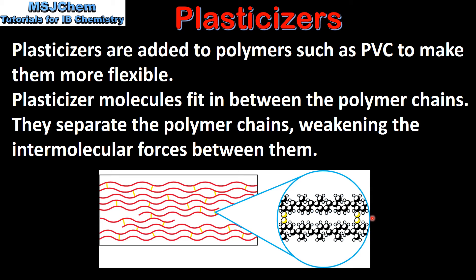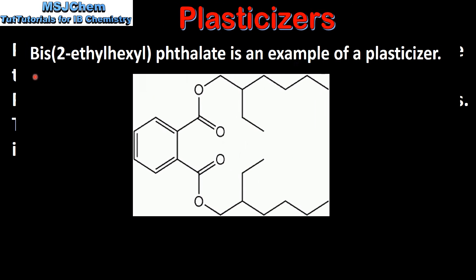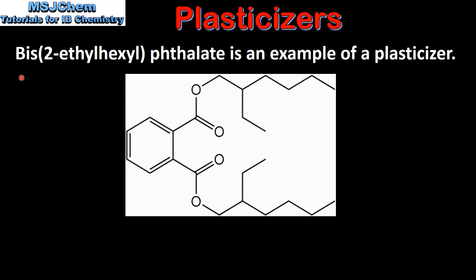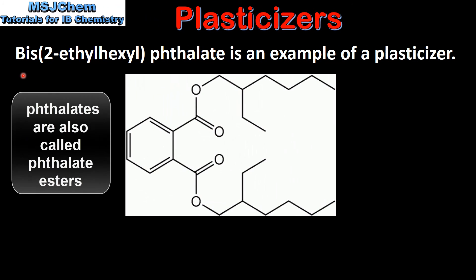The flexibility of the PVC can be controlled by varying the amount of plasticizer in the polymer. An example of a plasticizer is bis-2-ethyl-hexyl-phthalate.